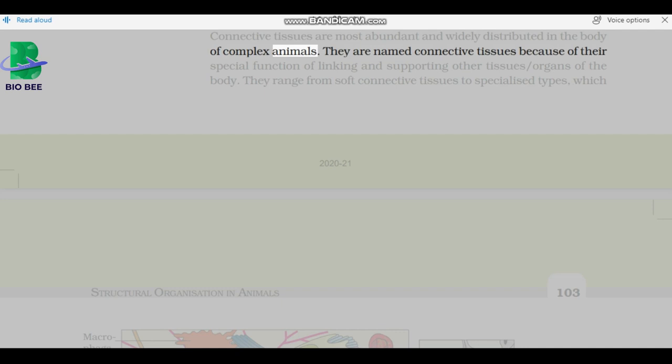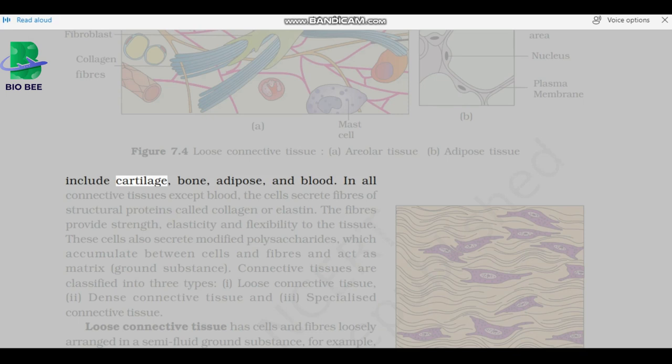Connective tissues are most abundant and widely distributed in the body of complex animals. They are named connective tissues because of their special function of linking and supporting other tissues and organs of the body. They range from soft connective tissues to specialized types which include fat storage, cartilage, bone, adipose, and blood.